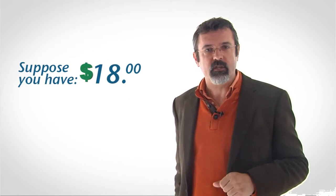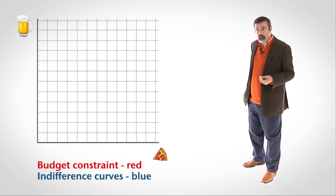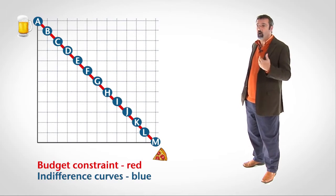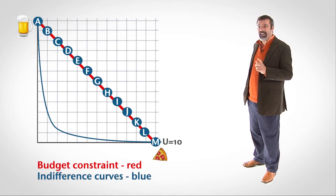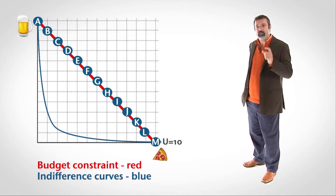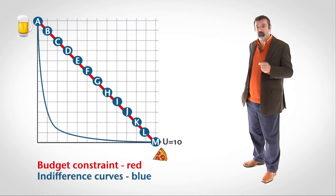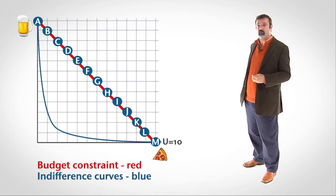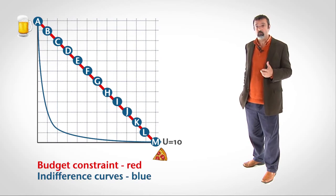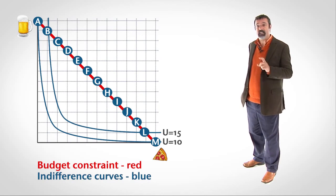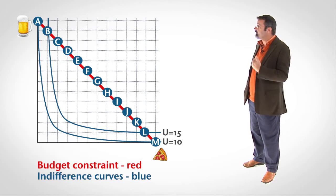Now suppose you have $18 to spend on beer and pizza. Let's superimpose several of your indifference curves on your budget constraint. You are capable of purchasing any combination of beer and pizza along the budget constraint. Look at consumption bundles A and M — you are indifferent between A and M because they both appear on the same indifference curve, and both combinations yield a utility of 10. You are capable of purchasing either combination because they both appear on the budget constraint. However, combinations B and L cost the same amount of money as A and M, but B and L yield more utility because they are on a higher indifference curve. Bundles C and K both cost the same as B and L, but are on a higher indifference curve still.